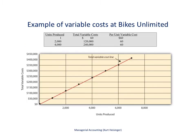Bikes Unlimited is an example used here — a company that produces and sells mountain bikes to retail stores. The chart shown here gives us an example of variable cost at Bikes Unlimited, showing the total cost to produce one unit, 2,000 units, and 4,000 units. The second column shows total variable cost and the next column shows per unit variable cost. The total changes with changes in activity, but the per unit variable cost does not.